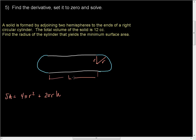We do have a volume measurement, so let's calculate the volume of this, because right now we've got two variables and we can only use one. So 12 is equal to the volume of a sphere, which is (4/3)πr³, plus the volume of the cylinder, which is πr²h.